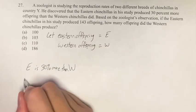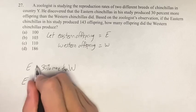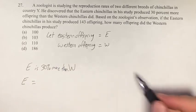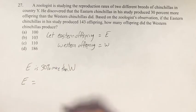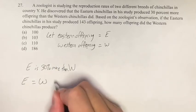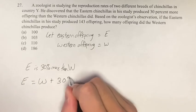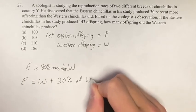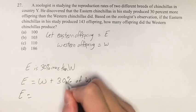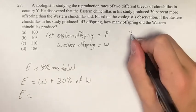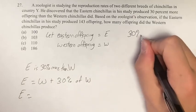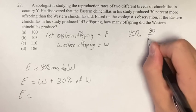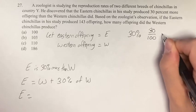What does this mean? E equals 30% more than W. What does that look like? That looks like W plus 30% of W. What does that mean? Well, what is 30%? A percent is just a number out of 100, so this is 30 divided by 100, which is 0.3.